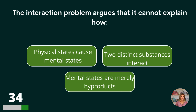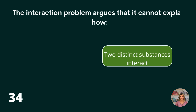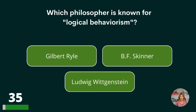The interaction problem argues that it cannot explain how physical states cause mental states, two distinct substances interact, or mental states are merely byproducts? Two distinct substances interact.